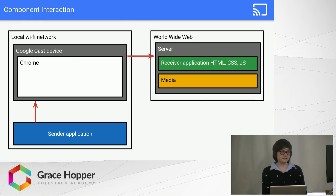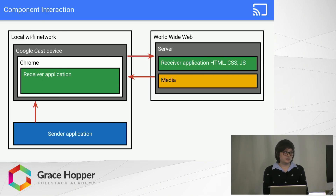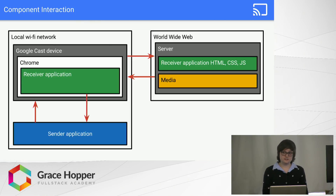Once it's done that, the server sends back the receiver application — HTML, CSS, JavaScript, and any media that was also requested. The receiver application is then loaded in the mini Chrome browser on your Chromecast, and once it's all set up and ready to go, it will send a message back to your sender application saying that everything is ready.